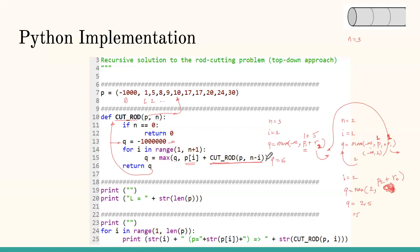We then continue iterating i from one to three for the n=3 rod, testing all possible cut positions to find the optimal solution. This is how the recursive rod-cut algorithm works — it exhaustively tests every cut position.